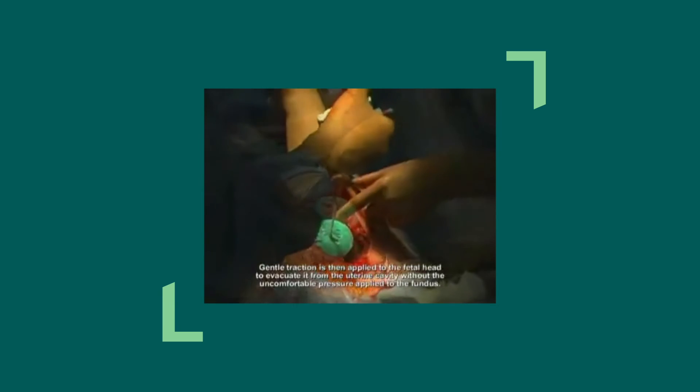Vacuum of 600 mercury is obtained by burying the green on the gauge. Gentle traction is then applied to the fetal head to evacuate it from the uterine cavity without uncomfortable pressure applied to the fundus.